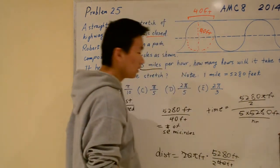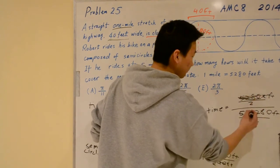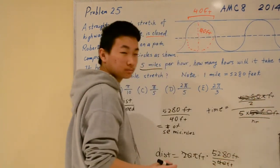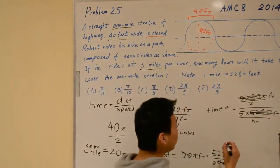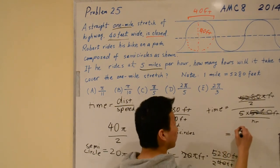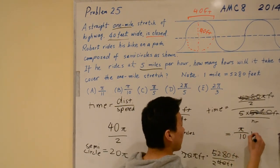We can cancel out these 5,280s, and after we simplify this, we get π over 10 hours.